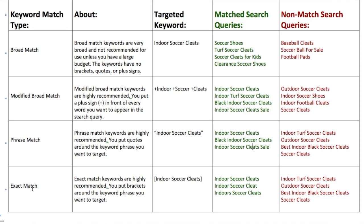Exact match is the easiest to understand — it just has to be the exact keyword or a very close variant. You put brackets around the keyword, like [indoor soccer cleats]. It will match searches for indoor soccer cleats or close plurals like indoor soccer cleat or indoors soccer cleats. Anything else — outdoor soccer cleats, best indoor soccer cleats — won't match. So exact match only fires for the same exact phrase or very close variants like plurals.